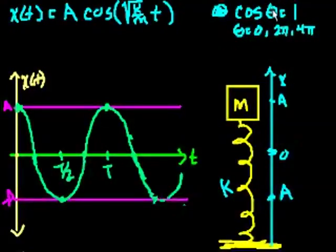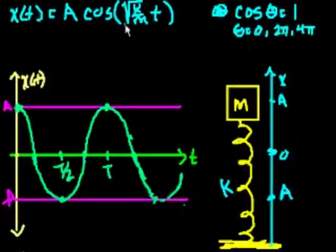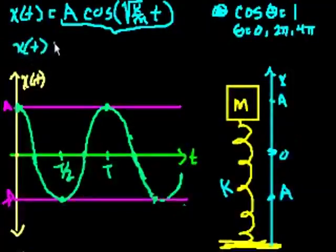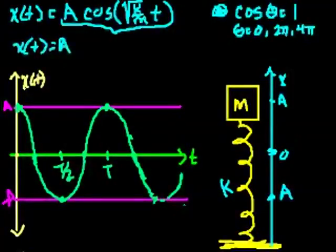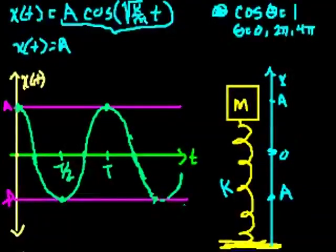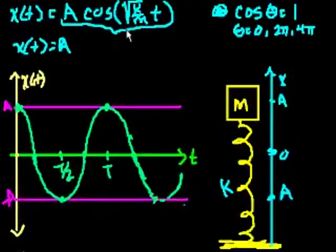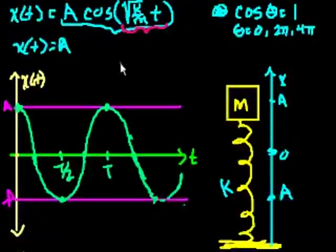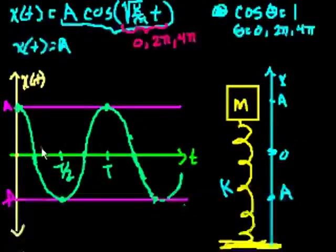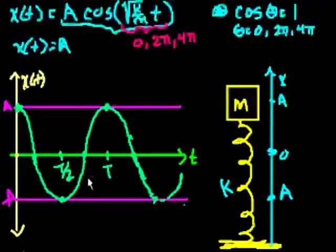This is true, right? Cosine of that angle is equal to 1. So the same thing is true. This function, x of t, is equal to a. At what points? x of t is equal to a whenever this expression within the cosines is equal to 0, 2 pi, 4 pi, et cetera.